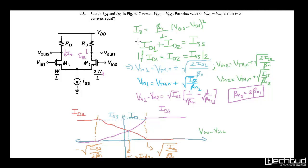So we know this equation. That is our second order equation that we have id equals βn by 2 times vgs minus vt whole square. So βn is μn Cox w/l. You know one more thing that id1 plus id2 that will sum up to ISS. So this is one more equation that we have.